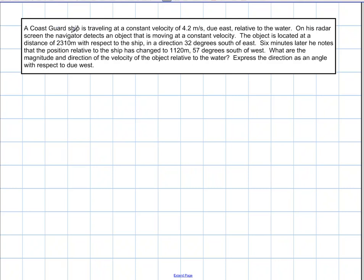The problem says a Coast Guard ship is traveling at a constant velocity of 4.2 meters per second due east relative to the water. On his radar screen the navigator detects an object that is moving at a constant velocity. The object is located at a distance of 2310 meters with respect to the ship in the direction of 32 degrees south of east. Six minutes later, he notes that the position relative to the ship has changed to 1120 meters, 57 degrees south of west. What are the magnitude and direction of the velocity of the object relative to the water, expressed as an angle with respect to due west?